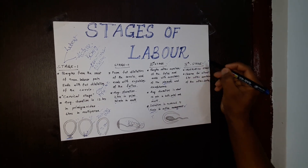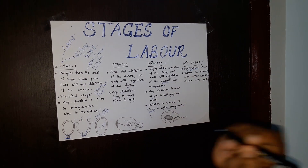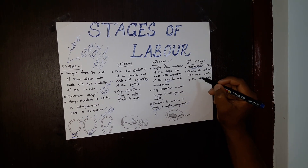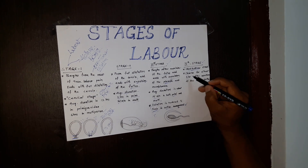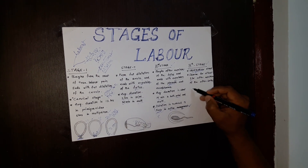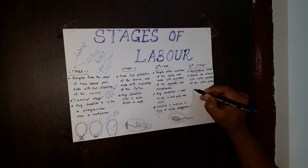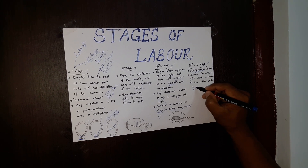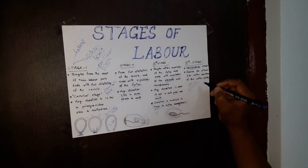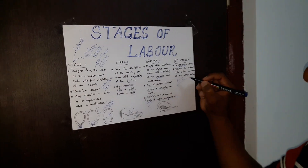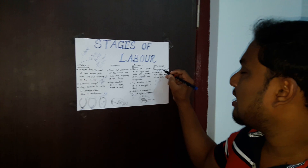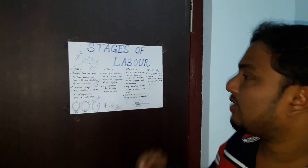Coming to the fourth stage — this is the observation stage. In this stage, you need to observe the mother for about one hour because there are many complications, the most major being PPH, postpartum hemorrhage. You need to observe for bleeding and monitor the general condition of both the mother and the baby.